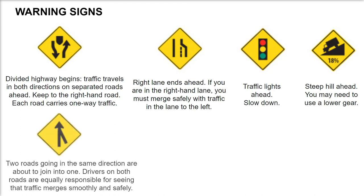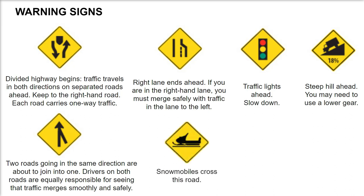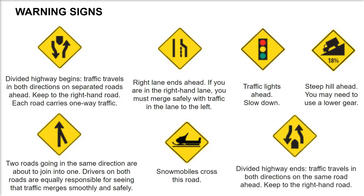Two roads going in the same direction are about to join into one — drivers on both roads are equally responsible for seeing that traffic merges smoothly and safely. Snowmobiles cross this road. Divided highway ends — traffic travels in both directions on the same road ahead; keep to the right-hand road.